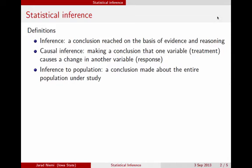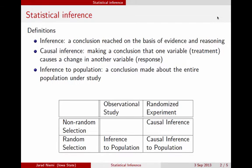The two key pieces that affect whether you can make causal inference and inference to populations are whether your data are coming from an observational study versus a randomized experiment, and whether your individuals in that study were randomly selected from the population or not.